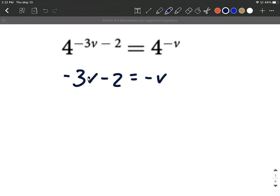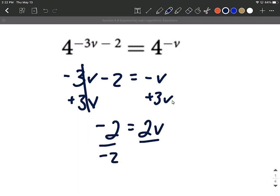To get this one solved, we want to get all the v's, all the variables on one side, so we'll add the 3v to both sides. So negative 2 equals positive 2v as we combine these like terms together. To get v all by itself, we'll divide by 2. Sorry, that's positive 2. So we get negative 1 equals our v.